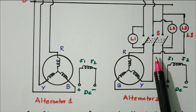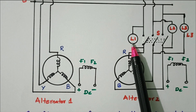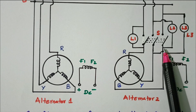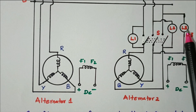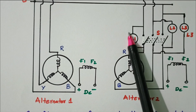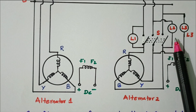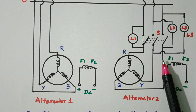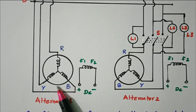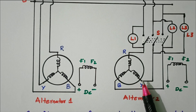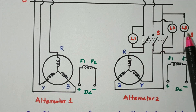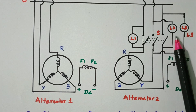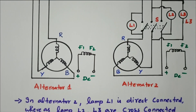A triple pole switch is available. Across the switch, lamps are connected: lamp L1 is connected directly in the R phase; L2 is cross-connected between Y and B phases; L3 is also connected between Y and B phases cross-connected. So L1 is directly connected to R phase and L2 and L3 are cross-connected between Y and B phases. Based on this procedure, we can identify voltage, frequency, and phase sequence.